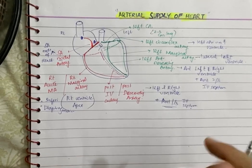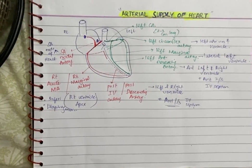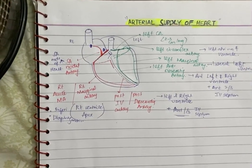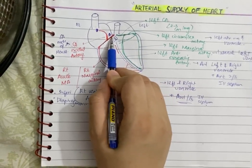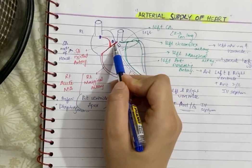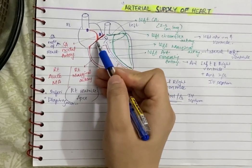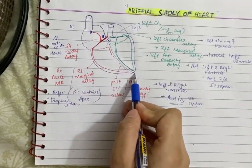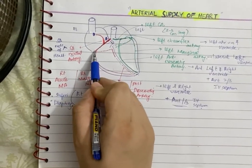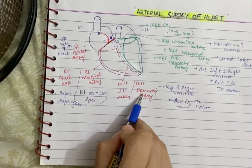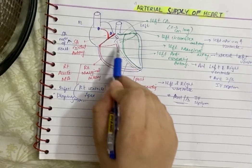The main rule to remember which branch supplies which area of the heart is: wherever a branch passes over the surface of the heart, it supplies that same area. Here is a quick recap summary: the aorta gives off the right coronary artery, which moves around the anterior coronary sulcus and gives off the SA nodal artery supplying the SA node, then the right marginal artery supplying the right ventricle and apex — the inferior or diaphragmatic surface — then curves behind to give off the posterior descending artery, supplying the posterior side of the left and right ventricles.